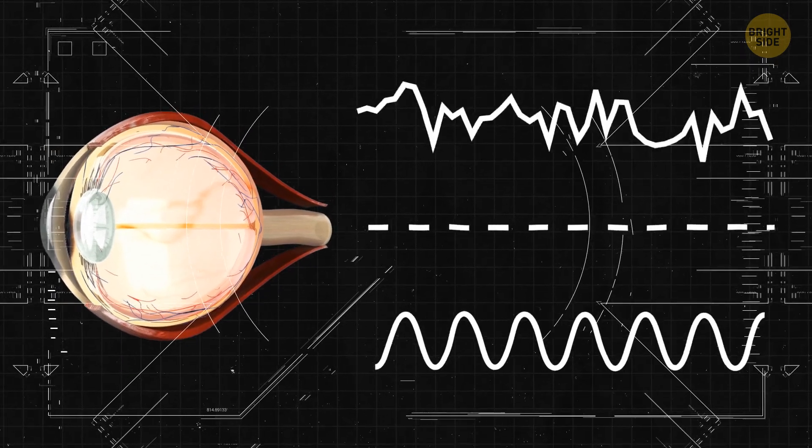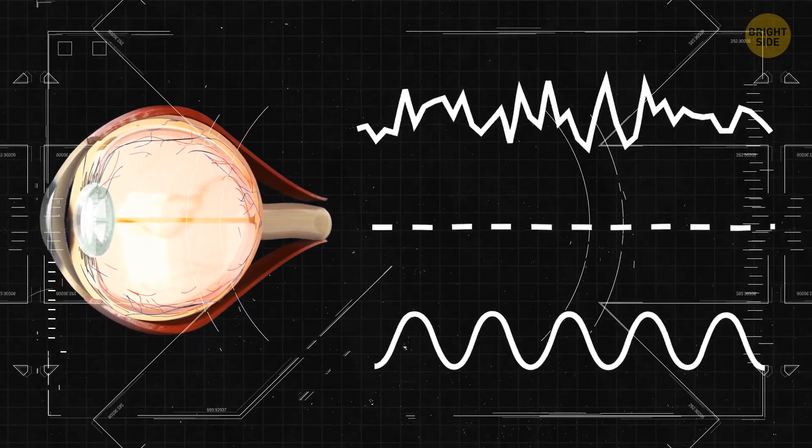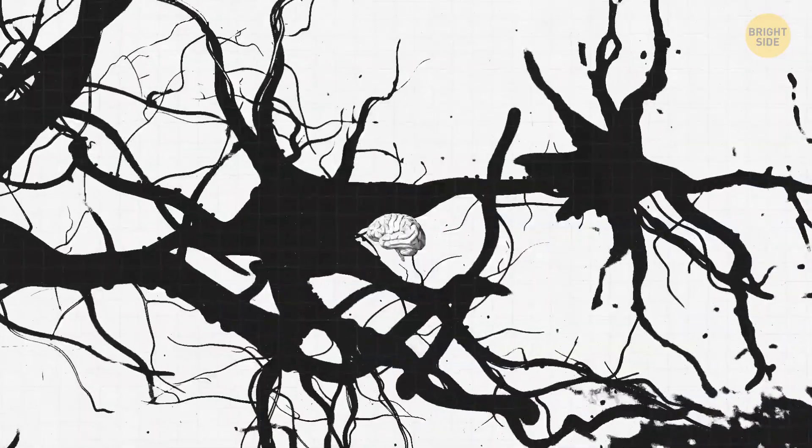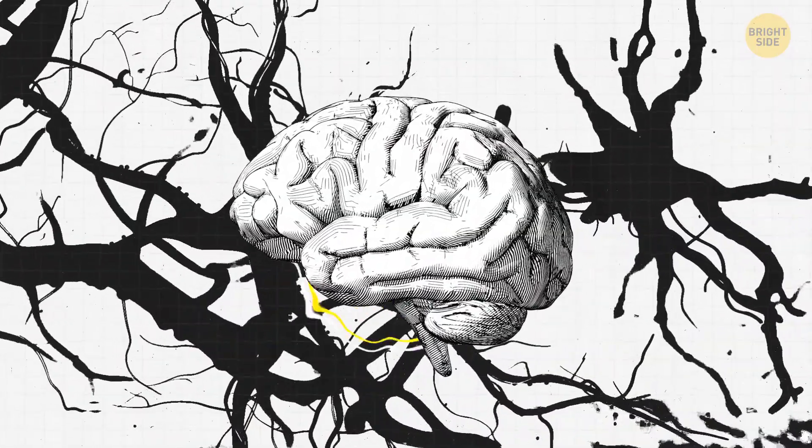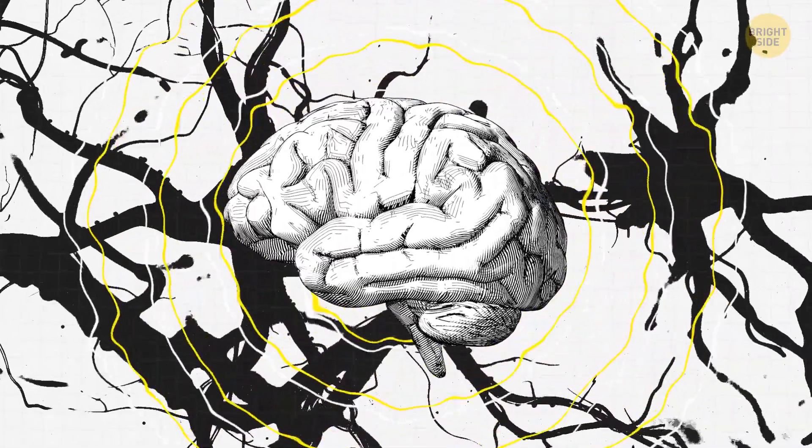This last one then transforms all that light into electrical signals that are sent to the brain for interpretation. Sounds like a lot of work, but it all gets done in milliseconds. This means that in just a single minute, our brain handles somewhere around 600 million bits of visual data.